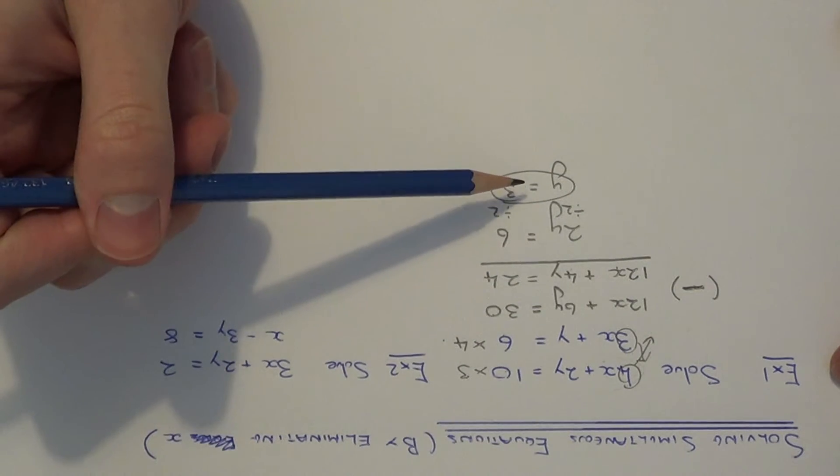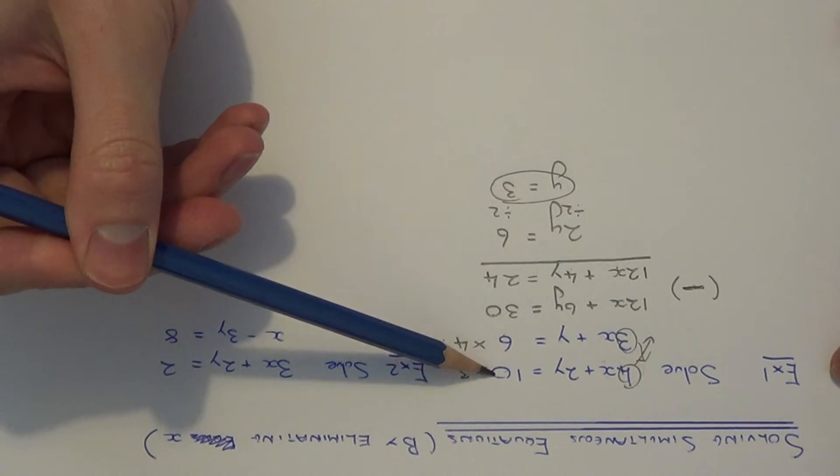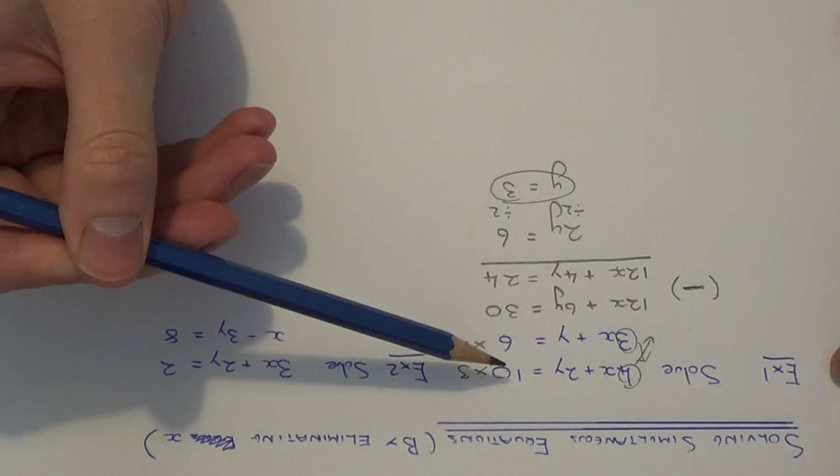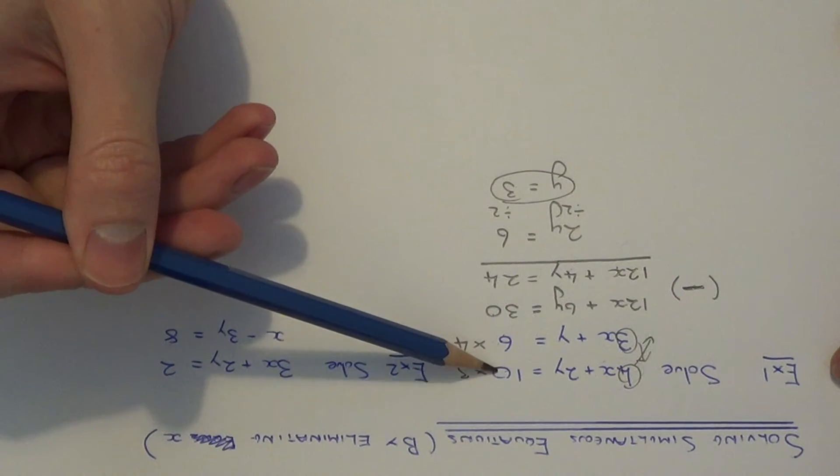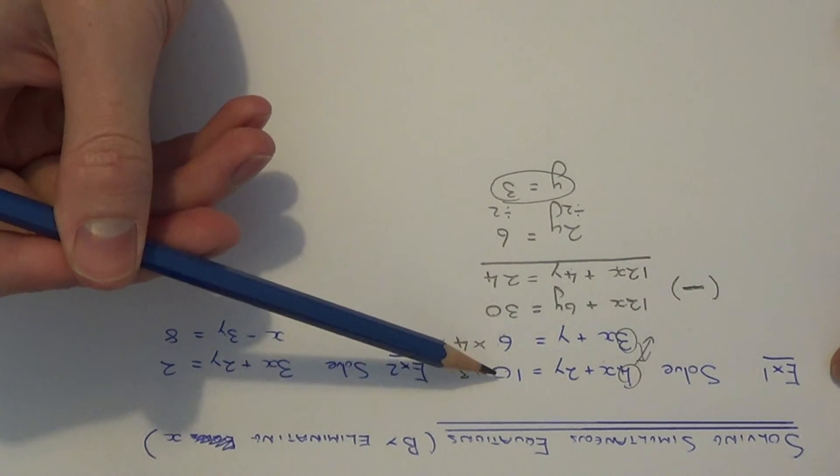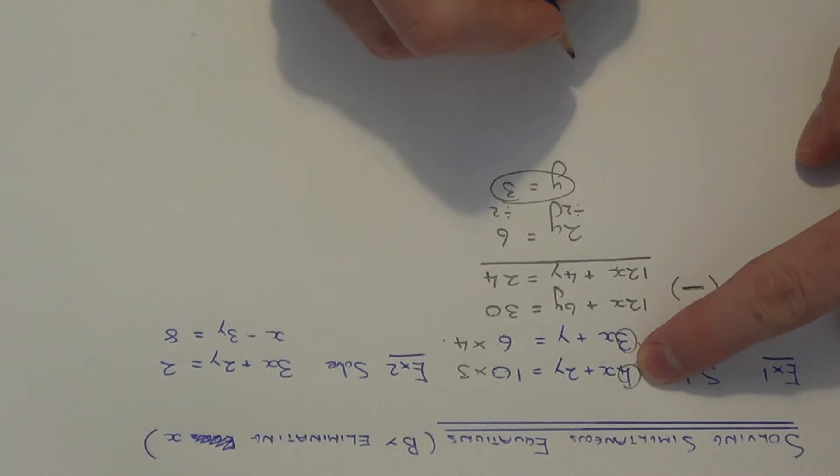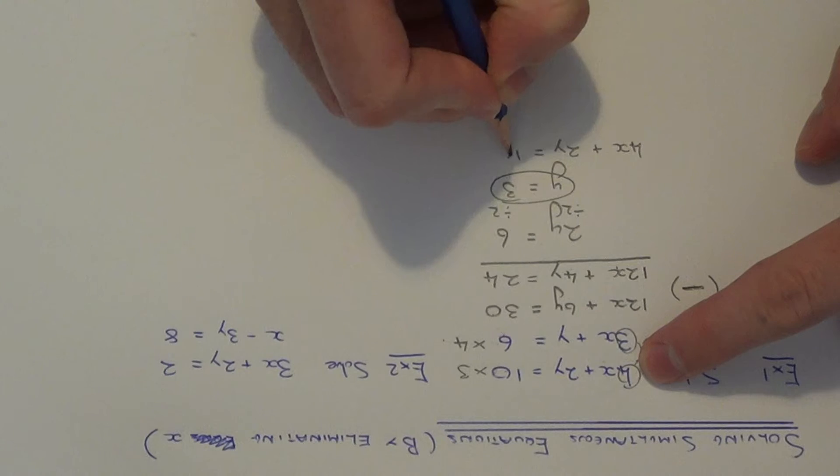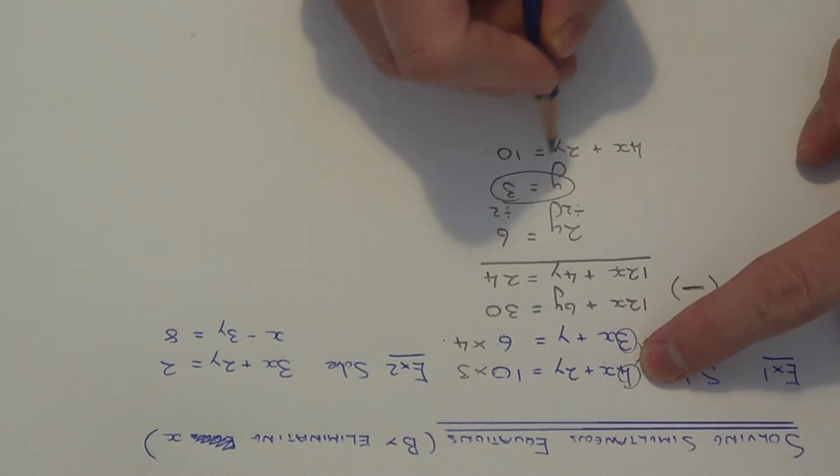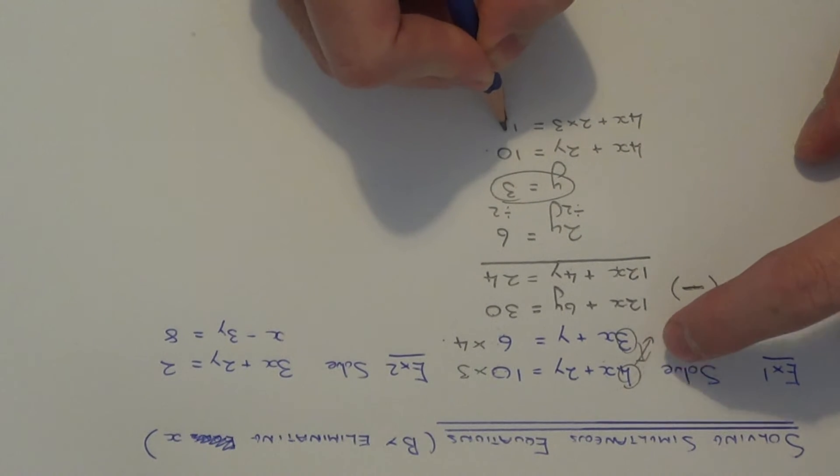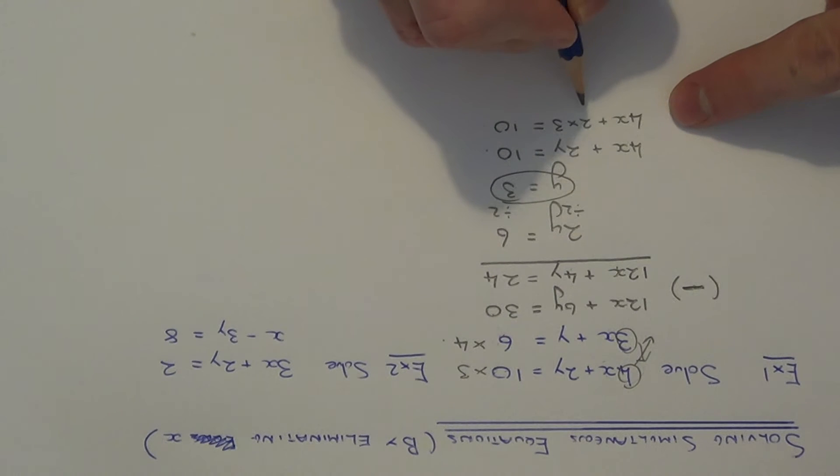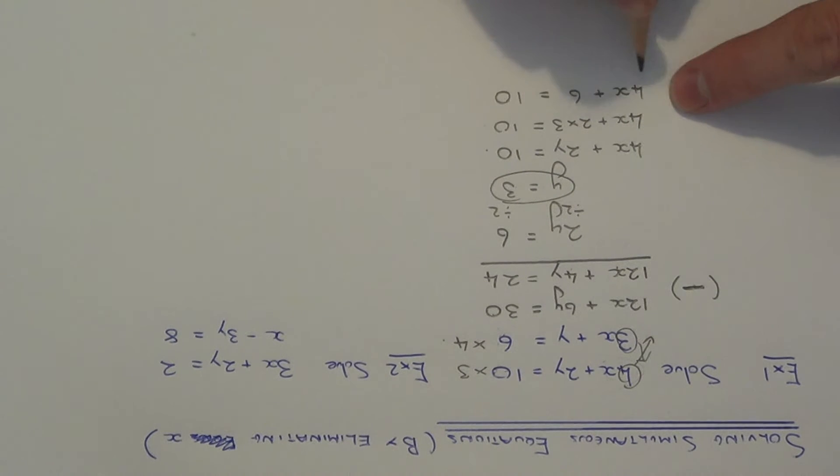All we need to do now is find the x solution. To get x, you need to substitute this value of y back into the first equation or the second equation. It doesn't matter which equation you choose, as both equations will give you the same answer. So let me go with the first equation. So substituting y equals 3, we get 4x plus 2 times 3 equals 10. So let's work out 2 times 3, that is 6. So we've ended up with the equation 4x plus 6 equals 10.